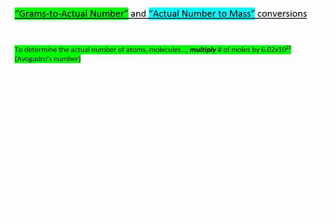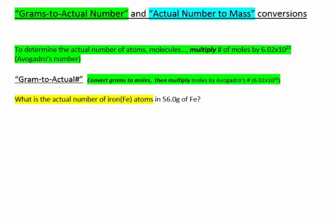First, I'll show you how to calculate the actual number of atoms, molecules, et cetera, to grams. Essentially, what happens in this calculation is you multiply the number of moles by 6.02 times 10 to the 23rd, which is called Avogadro's number. What is the actual number of iron atoms in 56 grams of iron? First, we need to determine the number of moles of iron that 56 grams of iron is. Then we multiply that number of moles by Avogadro's number.